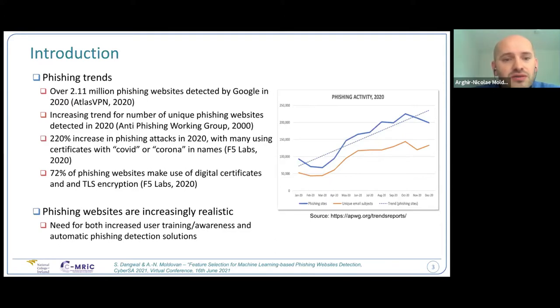According to F5 Labs, there were over 200% increase in phishing attacks in 2020. Most of these attacks use keywords related to the pandemic like COVID-19, and some warning trends are also increasing use of TLS encryption and HTTPS. So simple recommendations to users to watch the browsers and to make sure that the websites are secure, they don't really work. Phishing websites are increasingly realistic and there is a need for both increased user training and awareness and automatic phishing detection solutions.